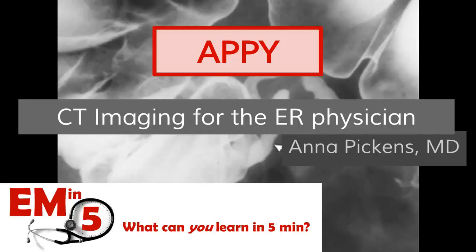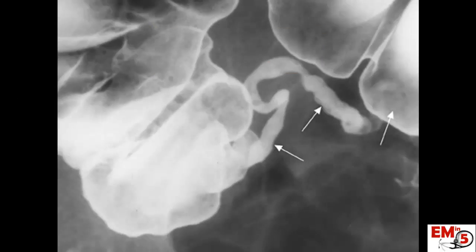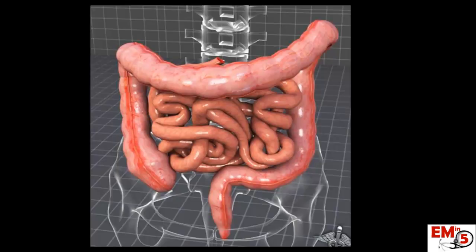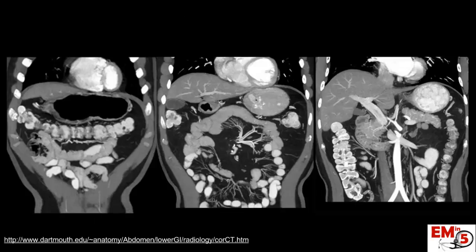This week for EMN5, we're going to go through appendicitis, which is part of this series on CT imaging for the ER physician. The first thing you have to do for appendicitis is actually find the appendix, which can be fairly tricky. The key is that you need to find the colon first.